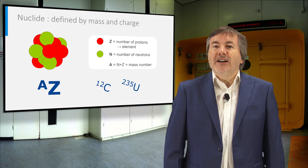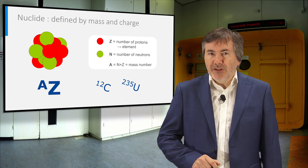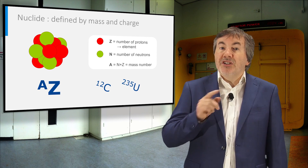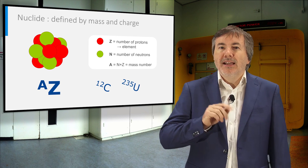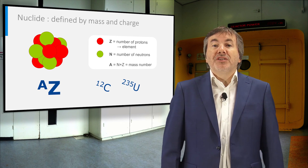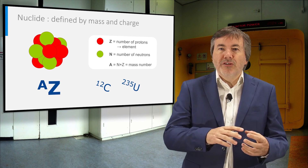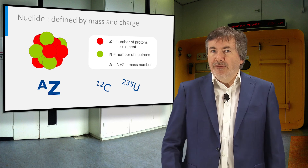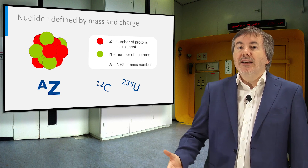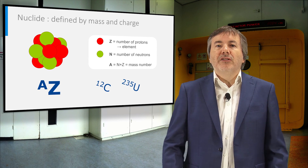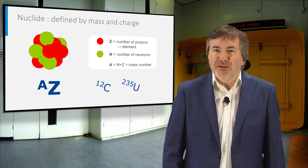A nuclide is defined by two numbers: the proton number, which tells us to which element the atom belongs, and the mass number, which is the sum of protons and neutrons inside the nucleus. For example, carbon-12 is a light nuclide consisting of six protons and six neutrons.